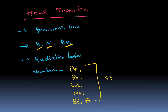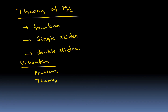In Theory of Machines: four-bar linkage, single slider crank chain, double slider crank chain — their inversions and examples are very very important. In Vibration: both problems and theory are asked. Critical speed and natural frequency problems will be asked.